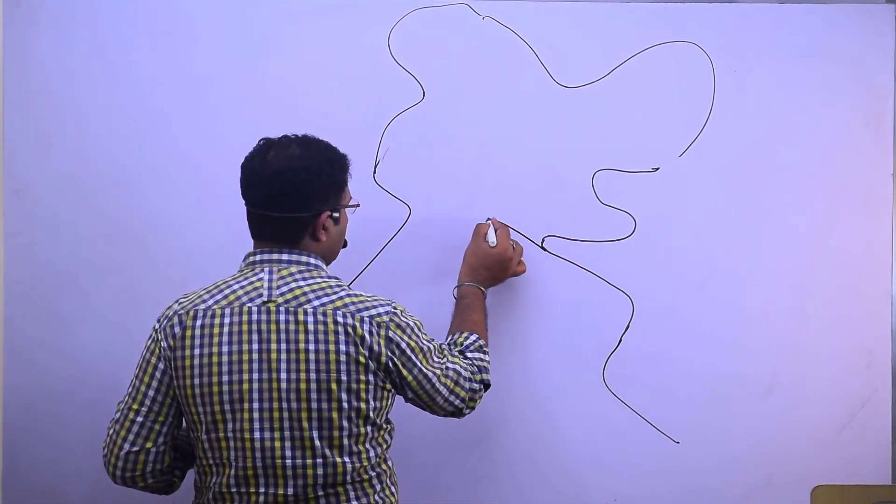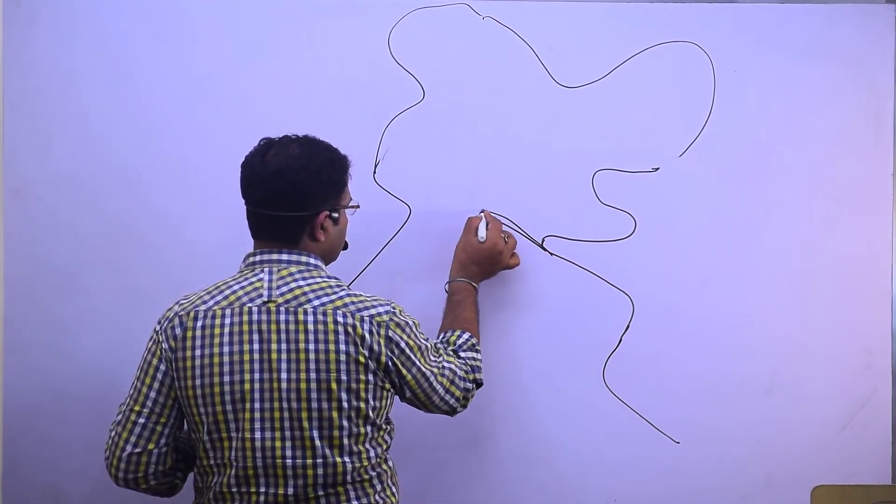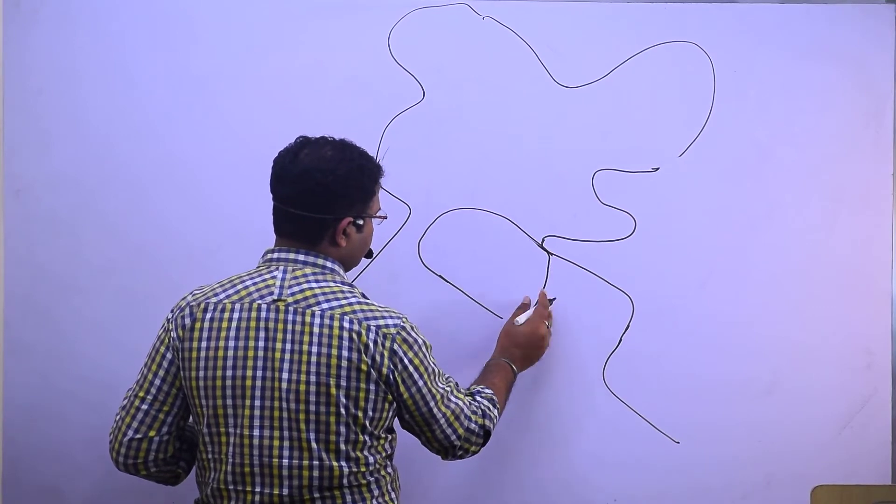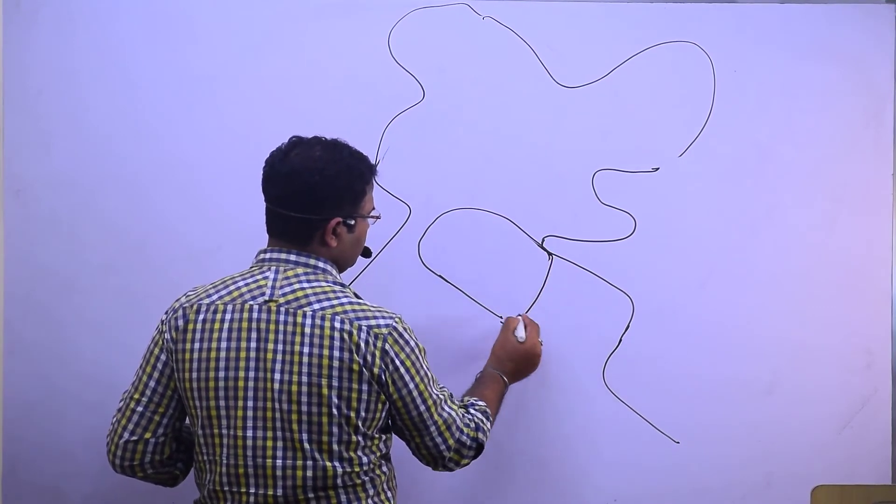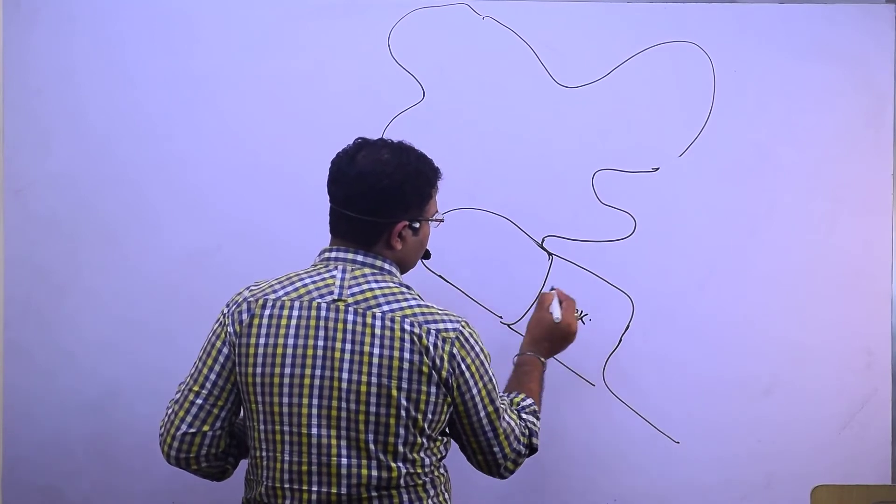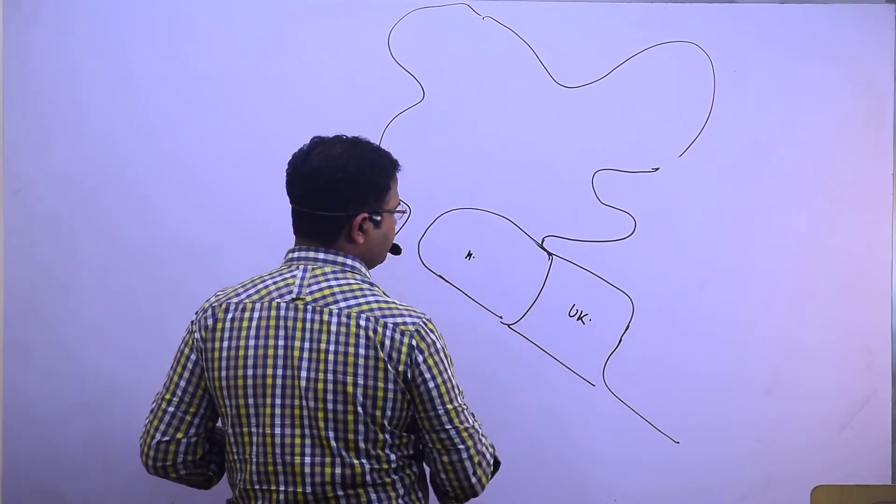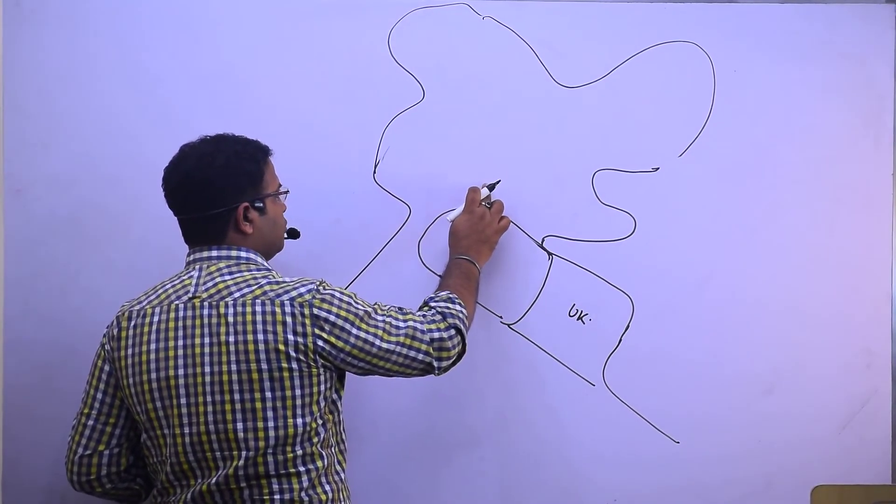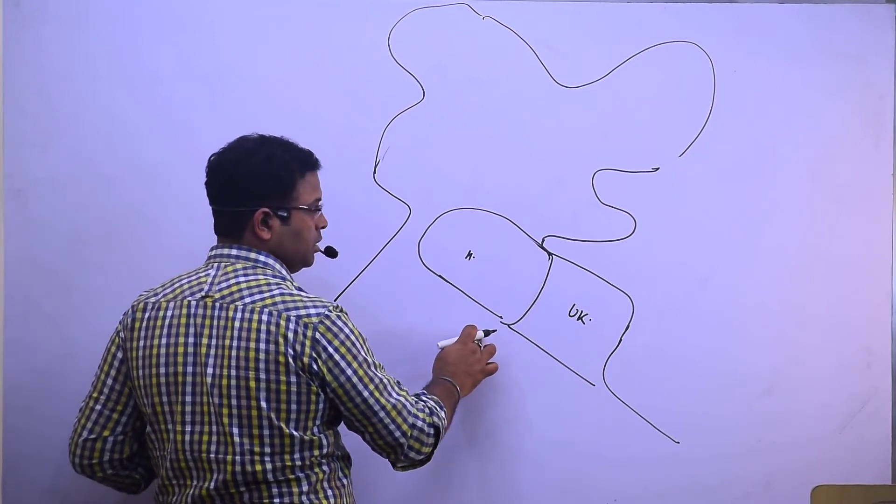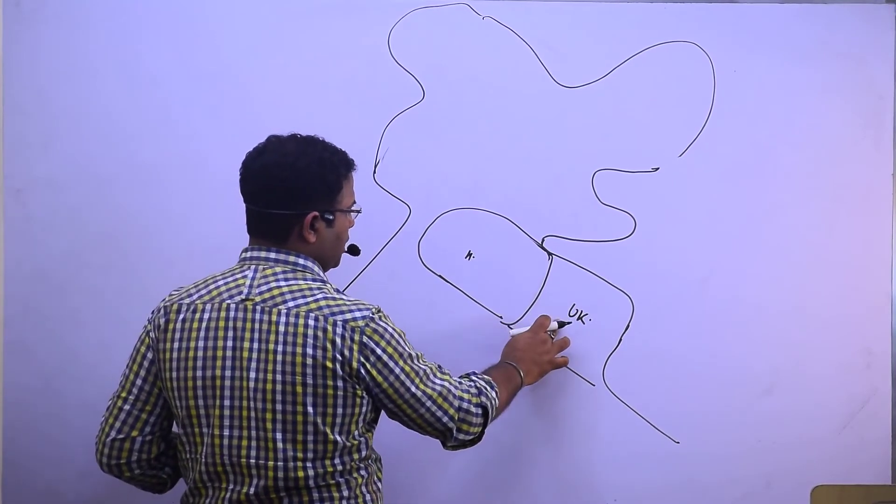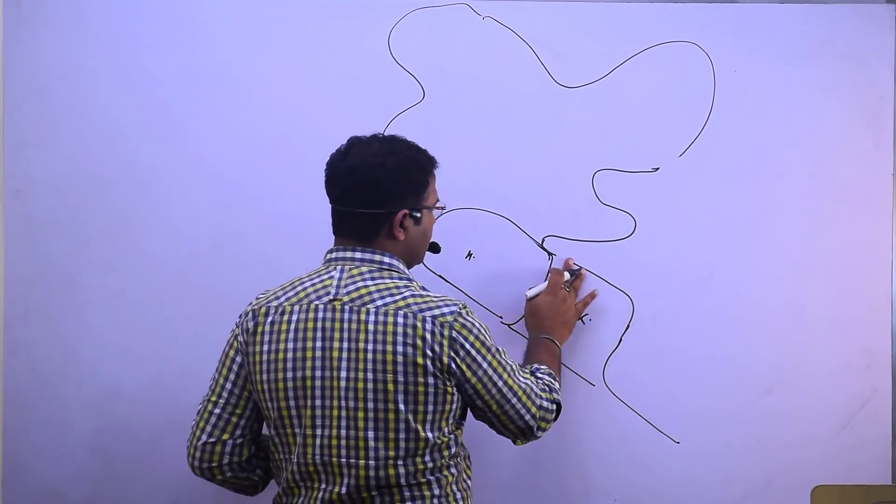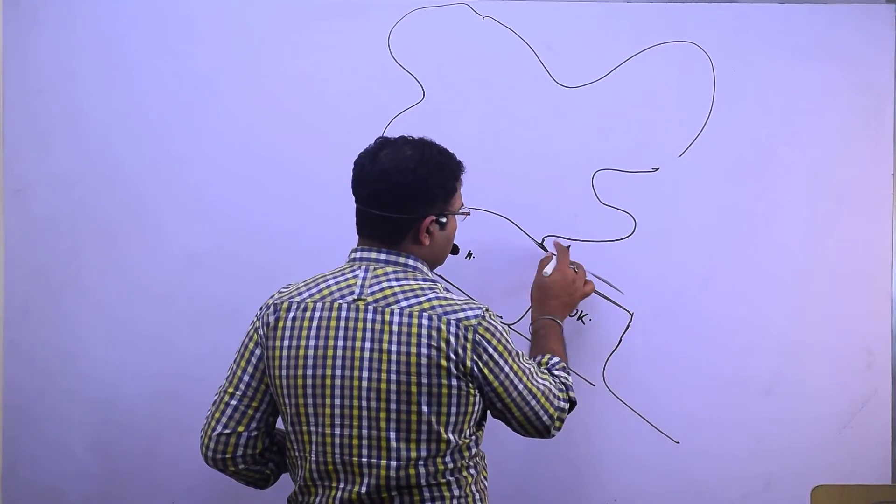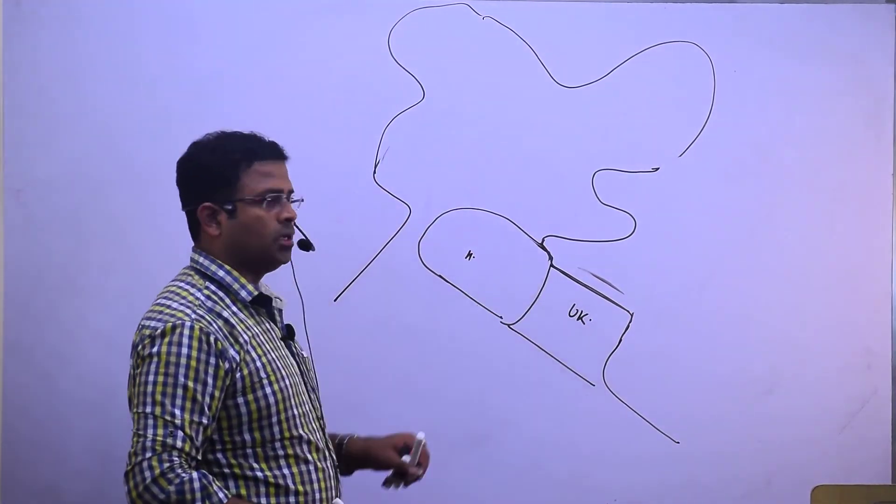If you see, this one is Himachal Pradesh, this one is Himachal Pradesh, and this one is Uttarakhand. Here it is making a boundary with Jammu and Kashmir, here is Punjab, then Haryana, then UP, and then Uttarakhand.